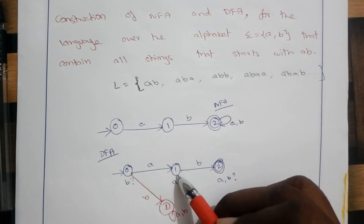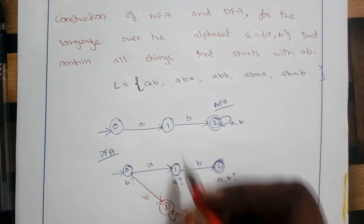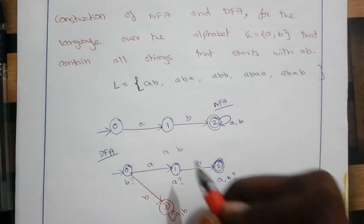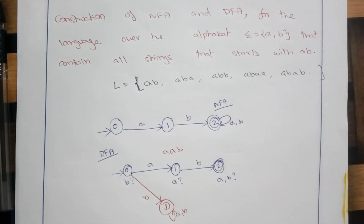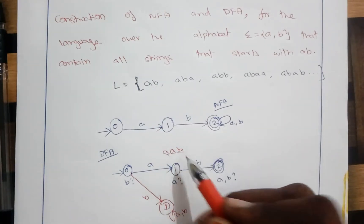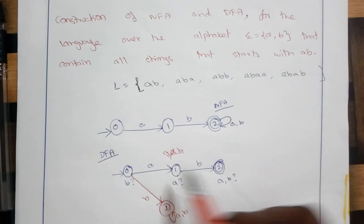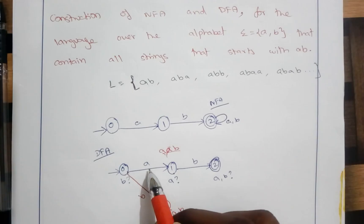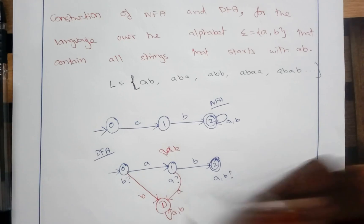State 1 is where we have already processed A and are waiting for B. If another A occurs in state 1, the string starts with AA instead of AB and must be rejected. So we trace that transition on A from state 1 to the dummy state D.